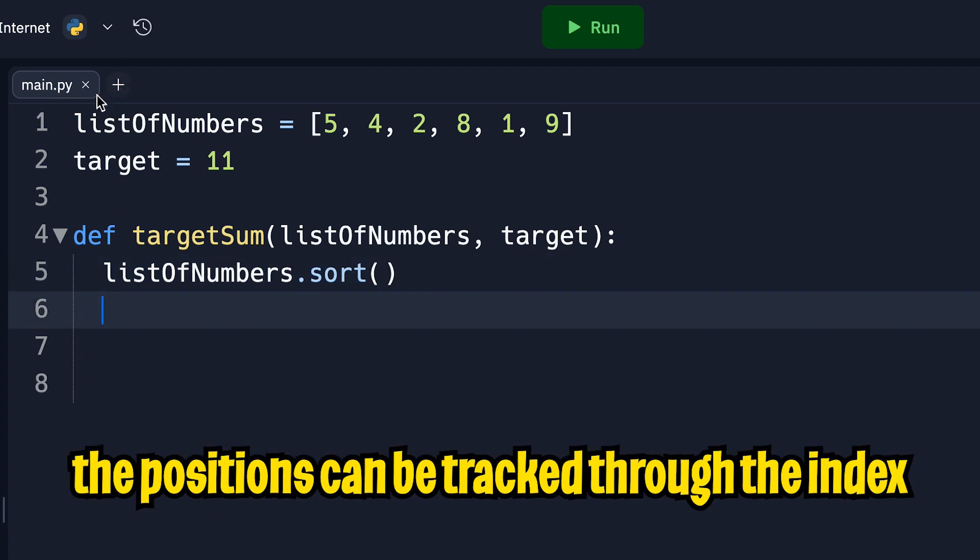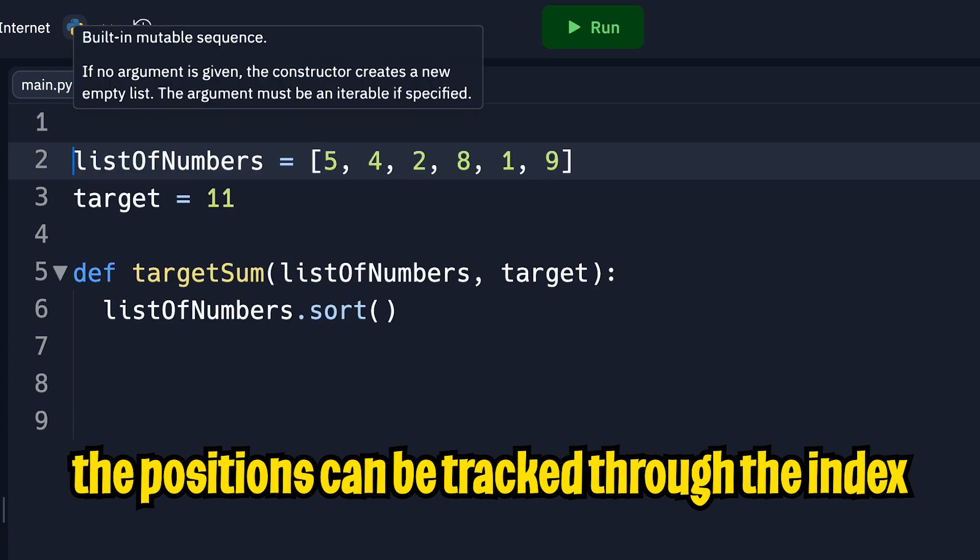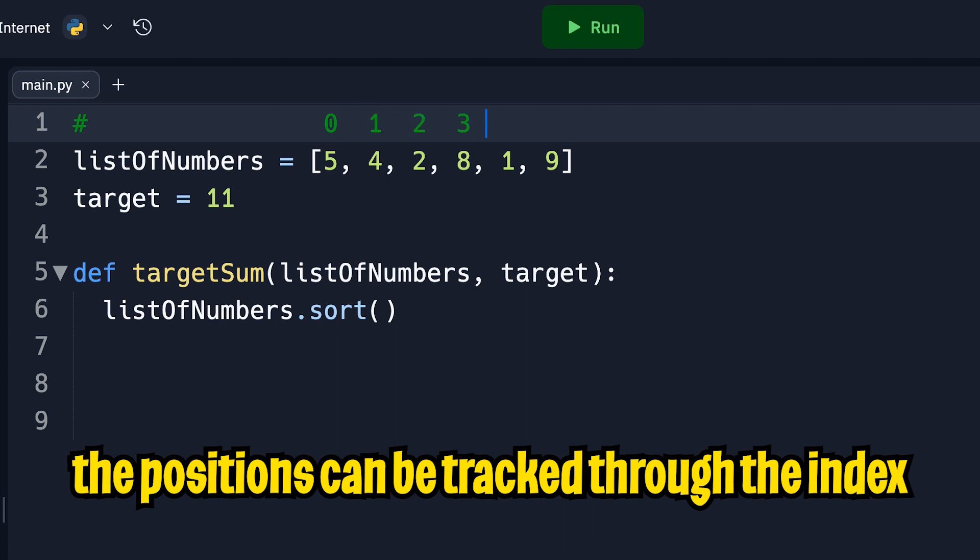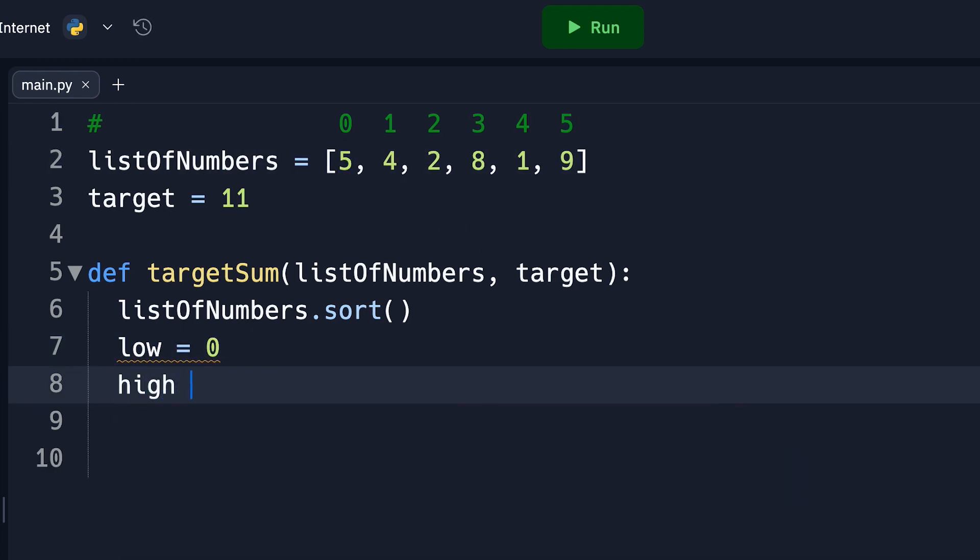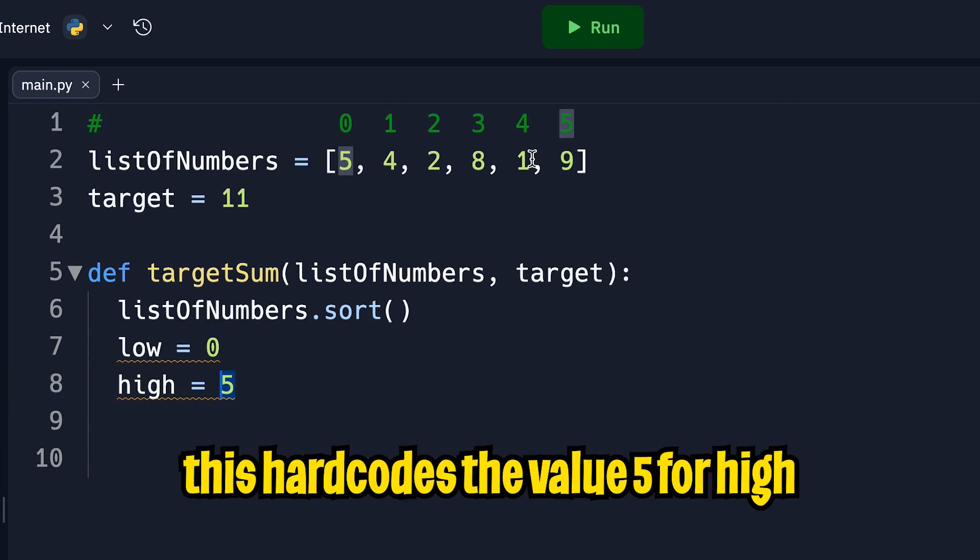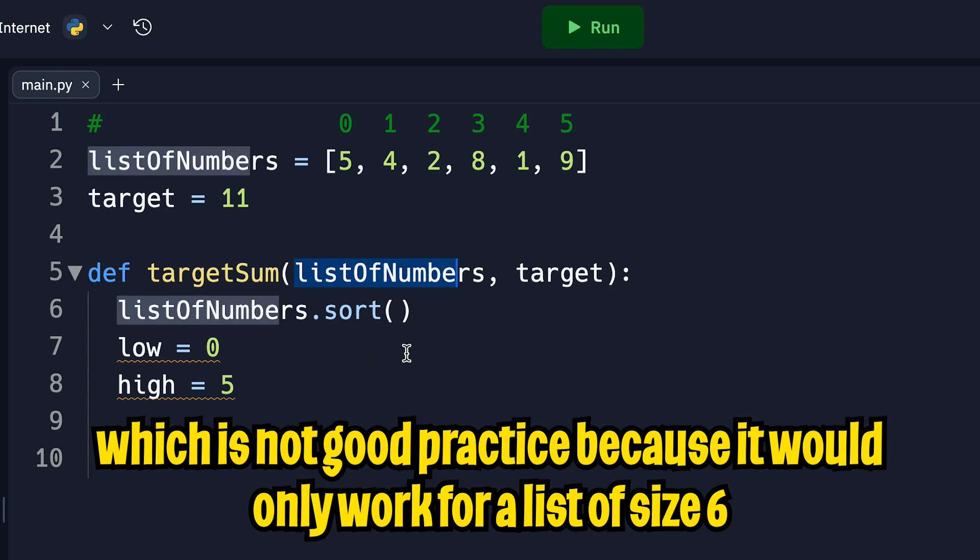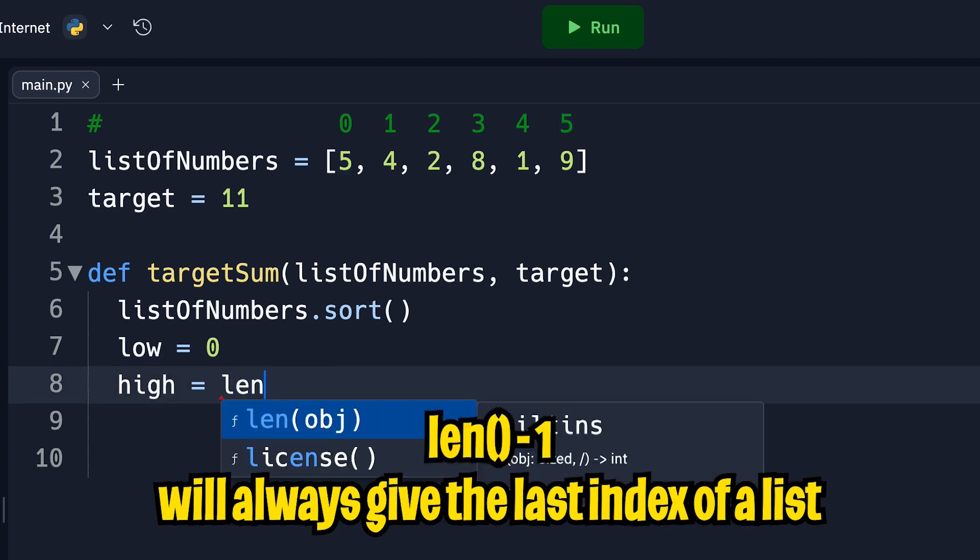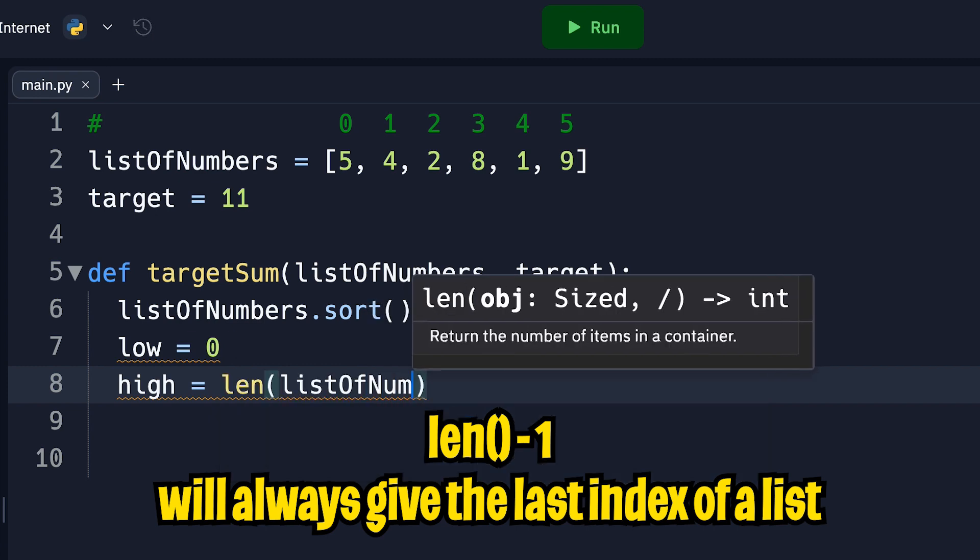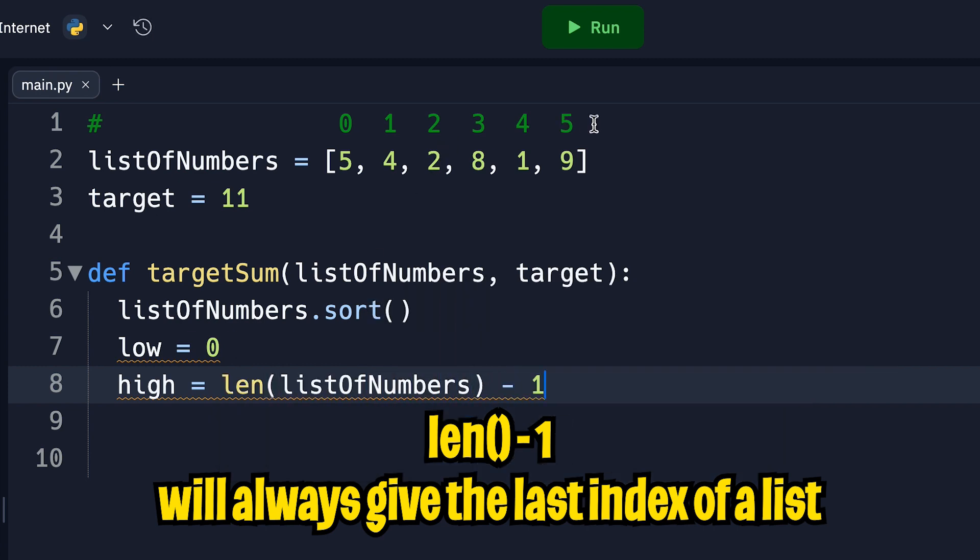Next, we want to keep track of the two positions. So here we have an example list, and I'm going to label the indexes to make our lives easier. So the first number starts at 0, 1, 2, 3, 4, and 5. So now let's create the variable low, which starts at 0, which is the beginning of the list. And now let's create a variable high, and let's set it to 5. So what we're doing here is we're hard coding the value 5. But if we got a different list of numbers with a different length, then 5 wouldn't work. But instead, we should be more flexible so that we can account for any size list. So instead, we can use the len function. So len, list of numbers, and then here, we can subtract 1.